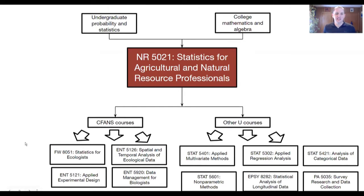As an example, within CFANS — the College of Food, Ag, and Natural Resource Sciences — there are a number of courses. This is the college that many of you are in, although not all of you that are in this class this semester.